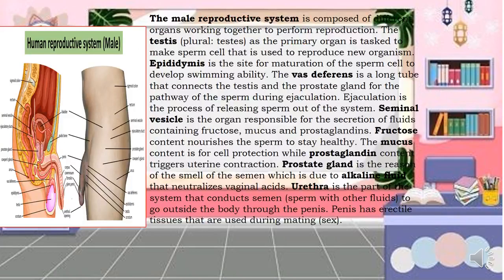Let us now discuss the male reproductive system. The male reproductive system is composed of different organs working together to perform reproduction. The testes — plural testes — is the primary organ tasked to make sperm cells that are used to reproduce new organisms.